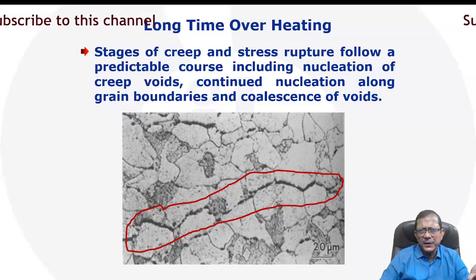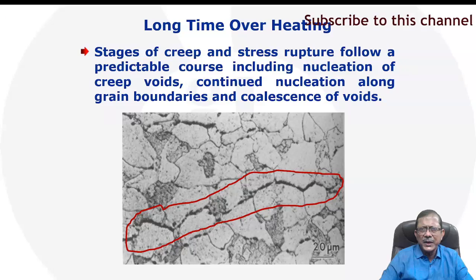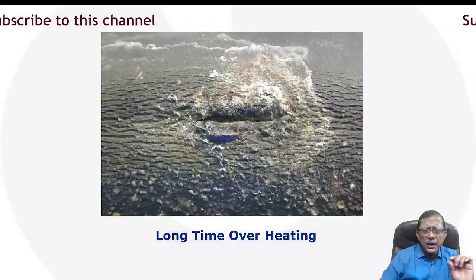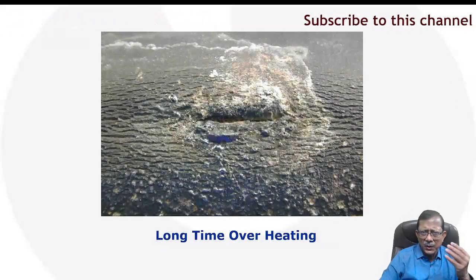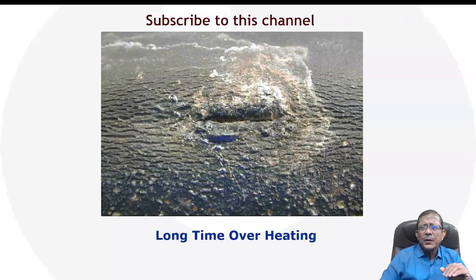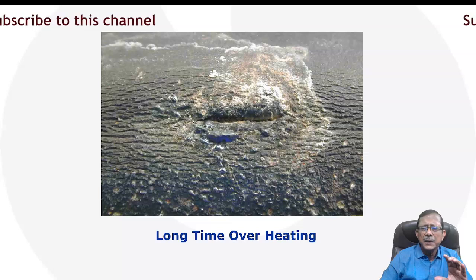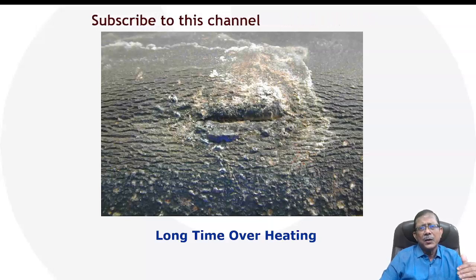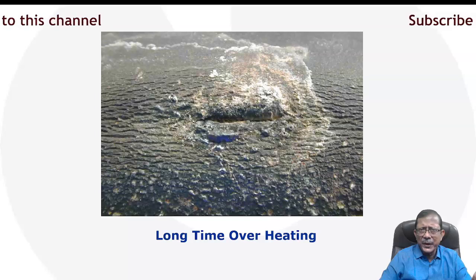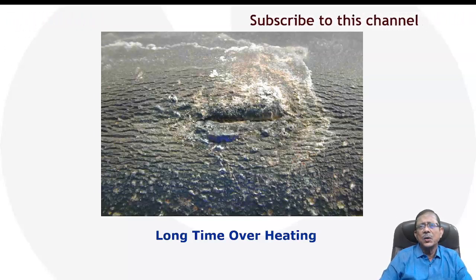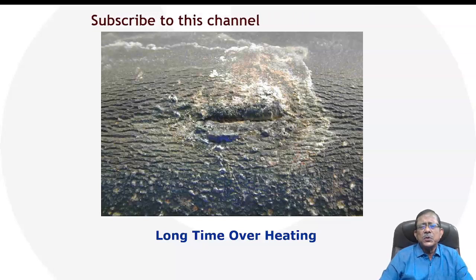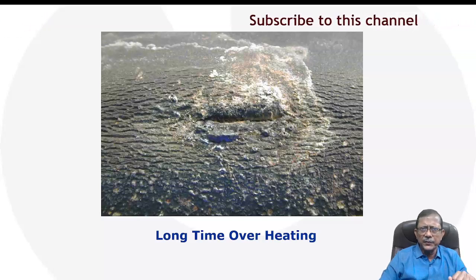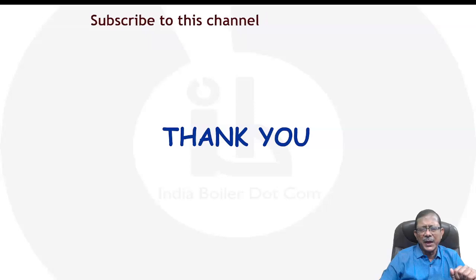Physically, the failed component may also show what is called an 'elephant hide' structure on the skin due to oxidation. That is what long-term overheating or creep failure looks like. Every boiler operation, inspection, or maintenance engineer must understand what causes creep — any component working in a creep regime temperature requires very careful attention. That will be all for today, thank you very much, bye.